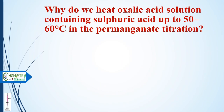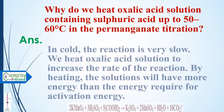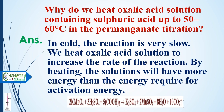Why do we heat the oxalic acid solution containing sulfuric acid to 50–60°C in permanganometric titrations? In cold conditions, the reaction is very slow. We heat the oxalic acid solution to increase the rate of reaction. By heating, the solution has more energy than the activation energy required. Without heating, the reaction will proceed but will take a very long time.